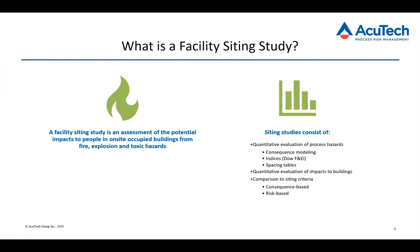Sometimes people have used indices such as the Dow Fire and Explosion Index or the MON Index, and occasionally I've seen people use spacing tables, although that's not terribly common. We're looking at a quantitative evaluation of the impacts to buildings — how the building responds to hazards, whether an explosion will damage or collapse the building versus just cosmetic damage, whether fire can damage the building, whether flammable gas or toxic gas can be ingressed into the building. Then we take a look at siting criteria, either consequence-based criteria such as explosion overpressure levels or a toxic gas level of lethality, or something like the EPA ERPGs, or risk-based criteria for a risk-based study.